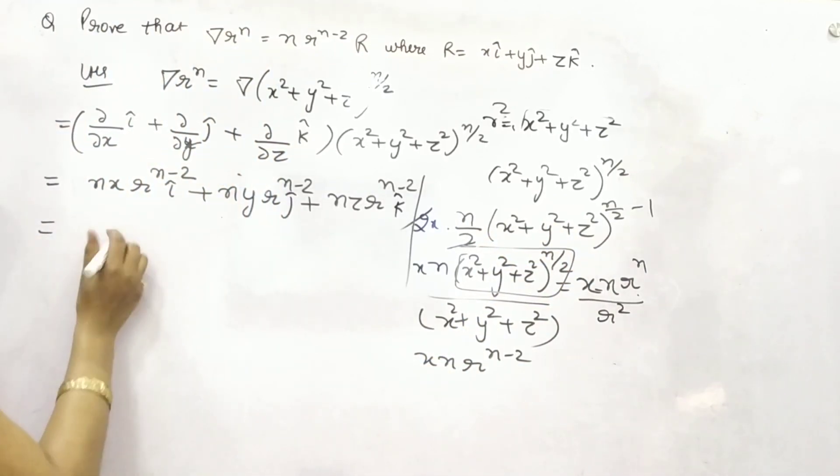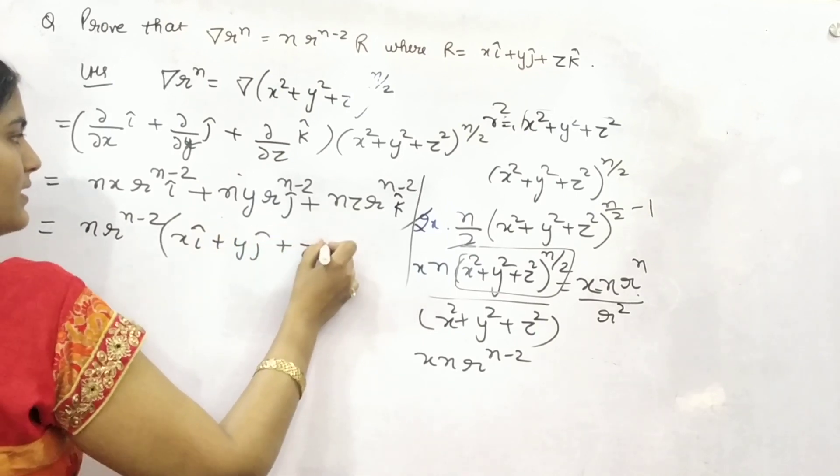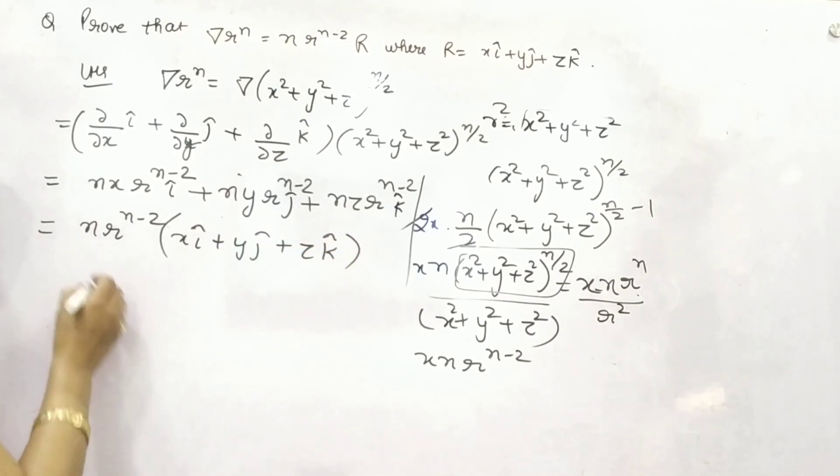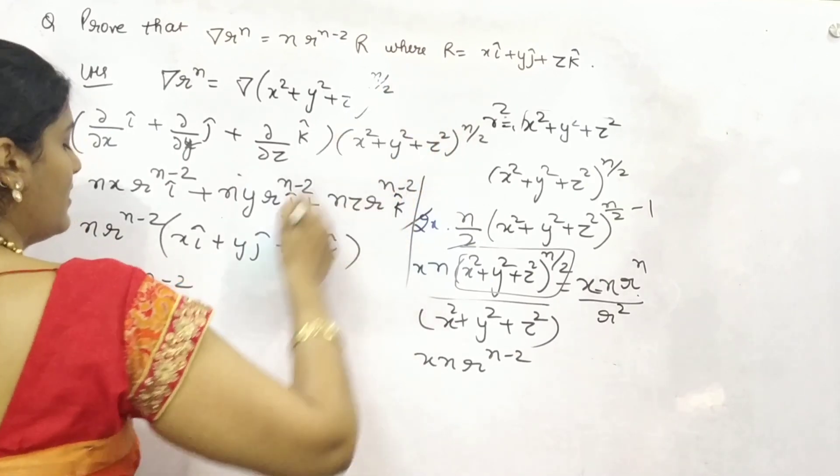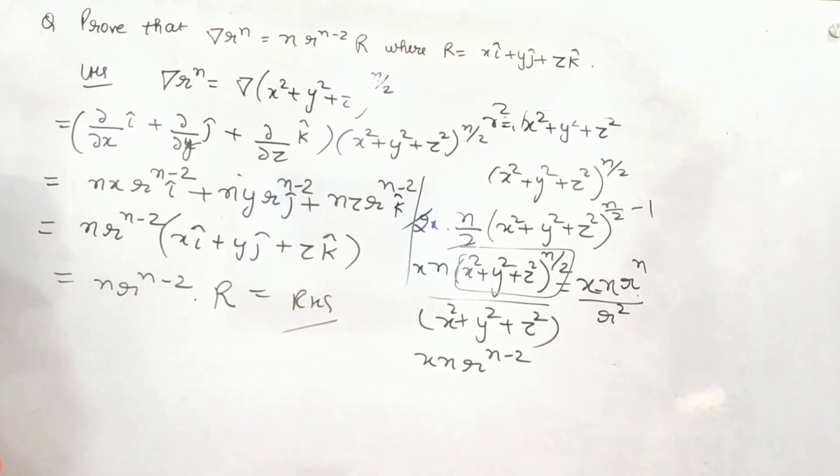Now, take something common. N, R raised to power N by 2 is common. So, x, i, y, j, z, k is left. And, what is it? According to question. This is nothing but R. And, this is your R, I hope you understand.